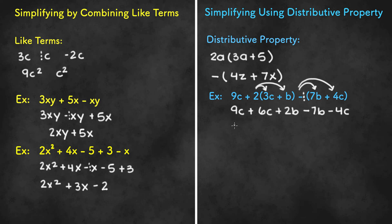Now we should rearrange the expression so that the like terms are closer together. We get 9c plus 6c minus 4c plus 2b minus 7b. And when you combine like terms we get 9c plus 6c is 15c minus 4c would be 11c, and then plus 2b minus 7b would be negative 5b.